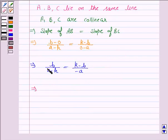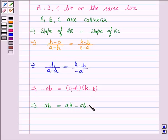Now, cross-multiplying we get -ab equals (a-h)(k-b). This again implies -ab equals ak minus ab minus hk plus hb.